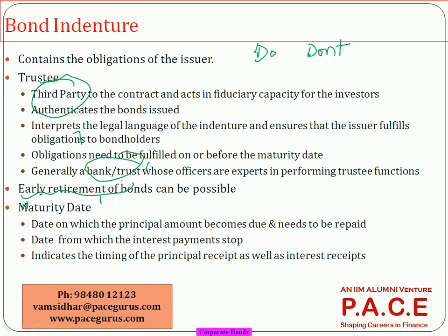A putable bond gives the investor the feature to sell the bond back to the company if desired; otherwise keep it until maturity. In a callable bond, it is the issuer or company that can buy back the bond at its discretion. Whether there is an early retirement provision — like callability — must be mentioned in the indenture. The maturity date is the date until which interest will continue and by which the principal payment must be complete.